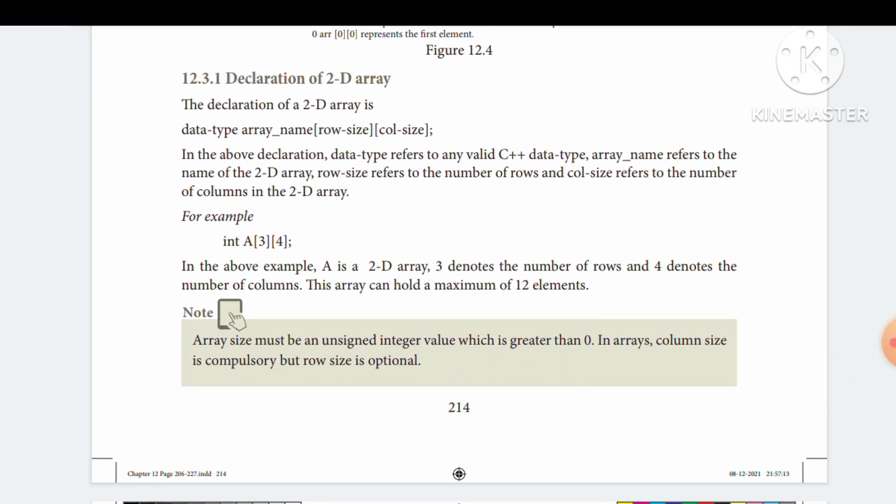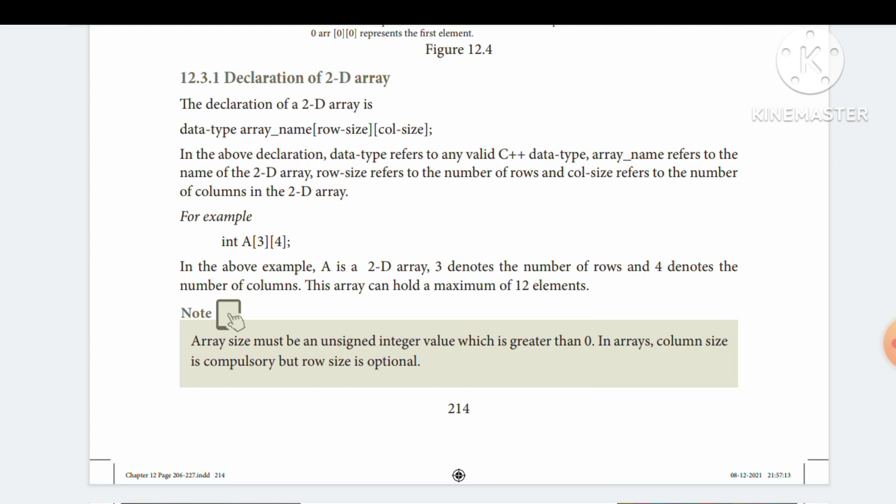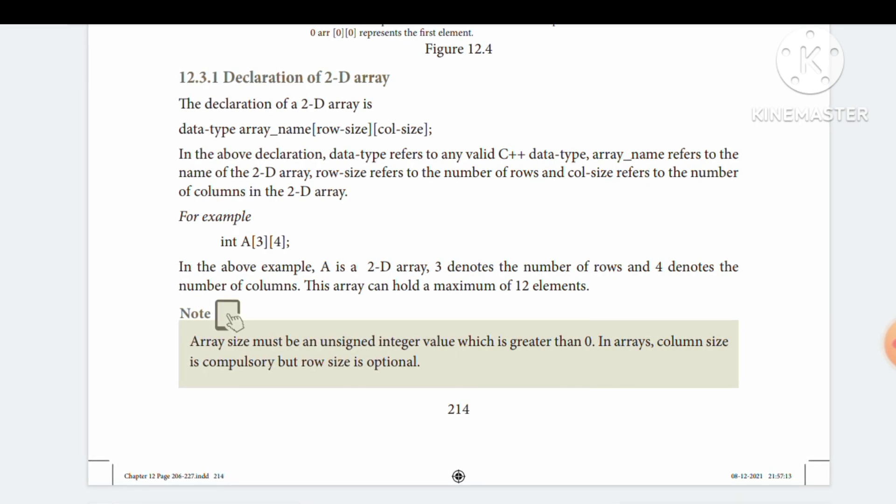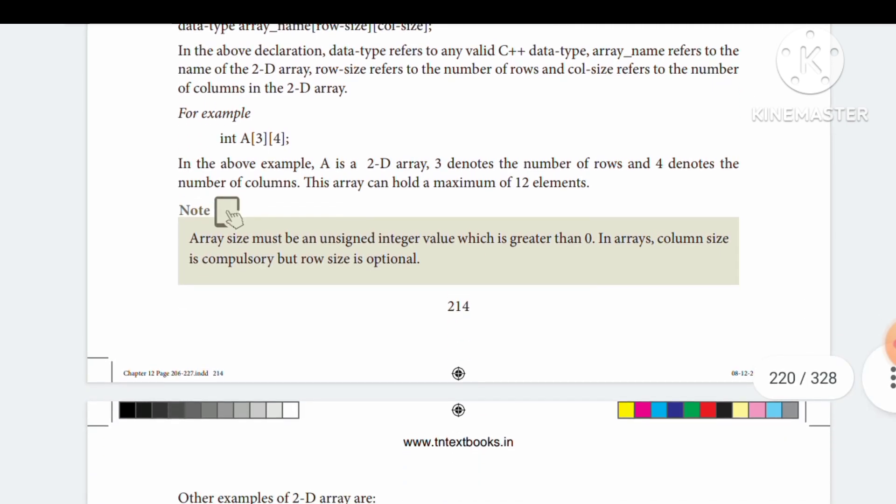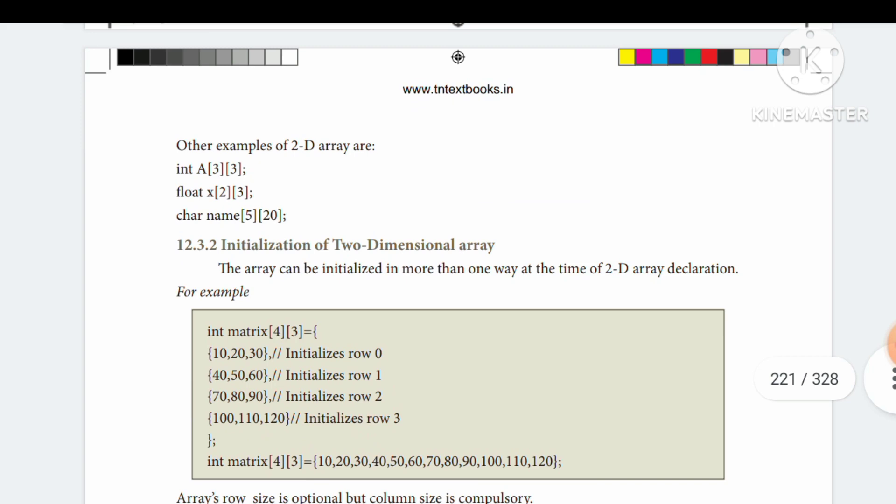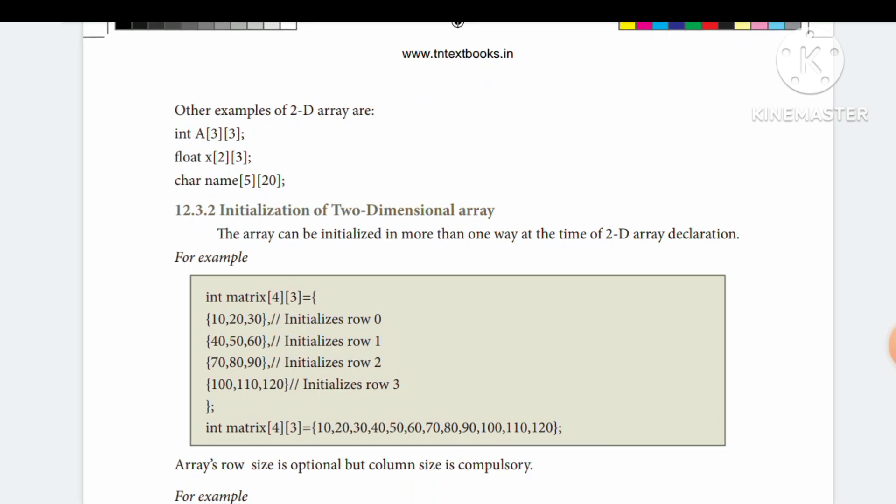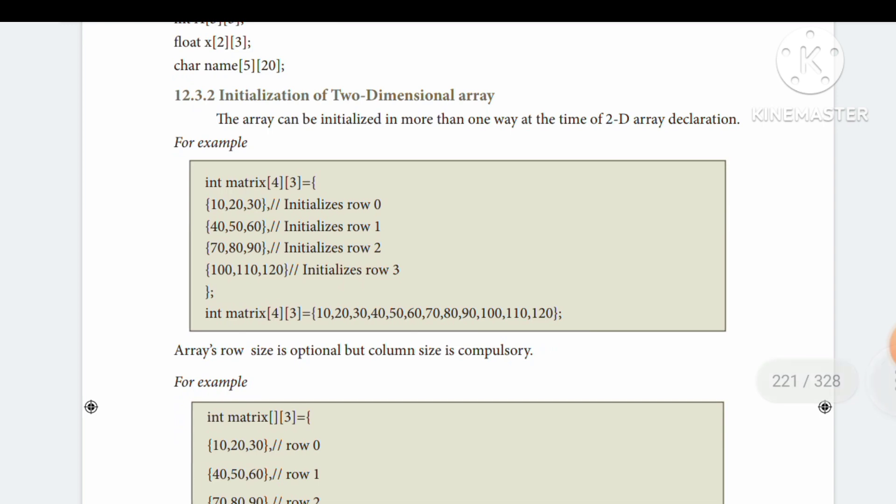How do we declare a 2D array? Unlike single dimension arrays with one square bracket, we use two square brackets - the first for rows and second for columns. For example, int a[3][4] means 3 rows and 4 columns, so total elements are 3 into 4 equals 12 elements. Other examples: int a[3][3], float a[2][3], char[5][20]. This is the definition and declaration of two-dimensional arrays.